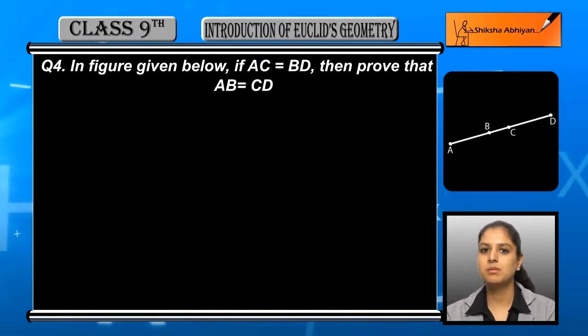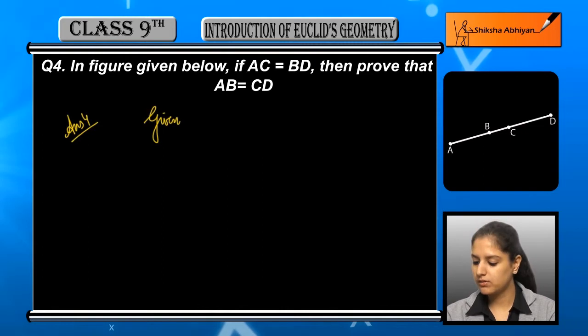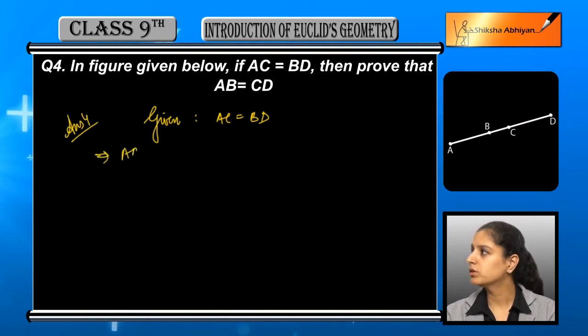So let us first of all write the given. We are given that AC is equal to BD.